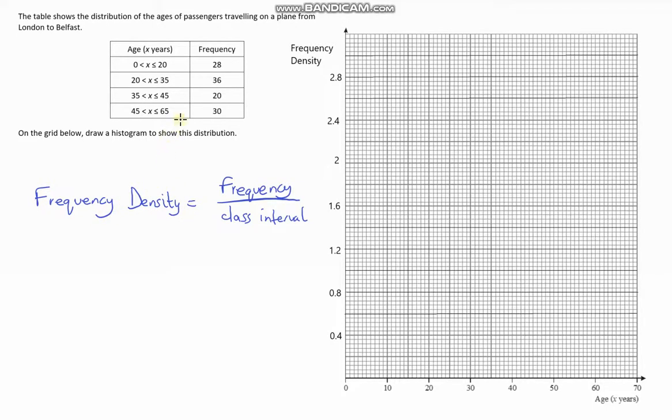Let's do that for this question. The table shows the distribution of the ages of passengers traveling on a plane from London to Belfast. We've got the age of the passenger and the frequencies, the total number of people. It says on the grid below, draw a histogram to show this distribution. A big clue is that our y-axis is frequency density, so we're going to calculate the frequency density first and then plot it on our histogram.